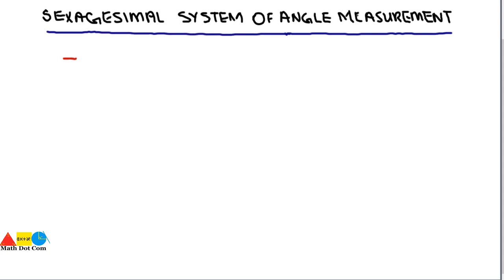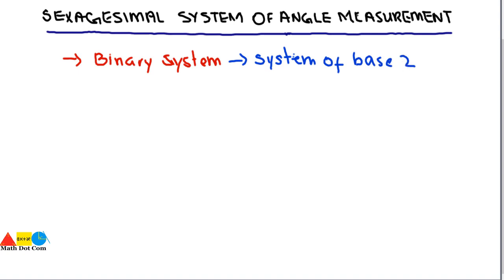We will start with the background. As we know, there is a binary system in mathematics. The binary system is a system of base 2. It means you will come across only two numbers in the binary system, which are 0 and 1. All other representations are made from these two numbers. So this is the binary system.